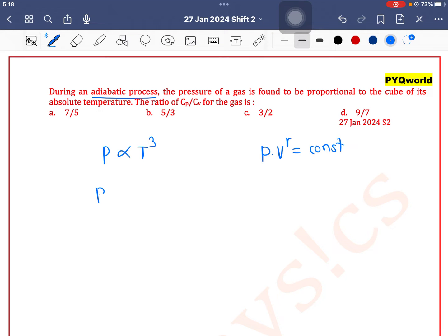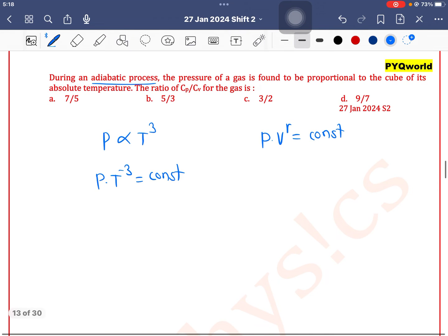So here P into T to the power minus 3 is equal to constant. If you know the pressure and temperature relation for adiabatic process, it's well and good. If you don't know, convert it. So I will use ideal gas equation because I don't want temperature, I want volume.